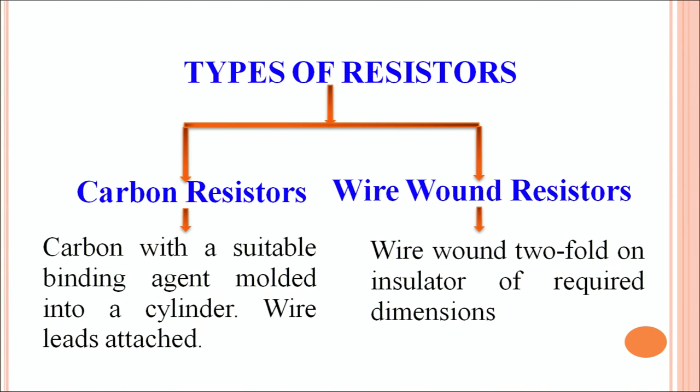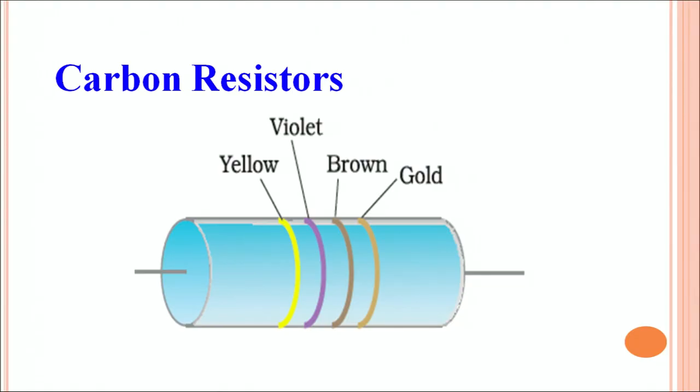The other type of resistors are wire wound resistors. Basically, you take a wire of desired resistance, you fold it in double and then wound it over an insulator. Here, this is a typical carbon resistor shown here.